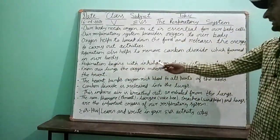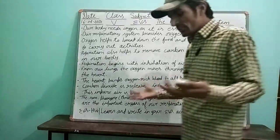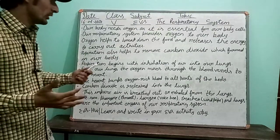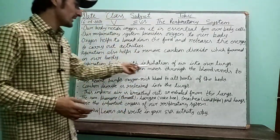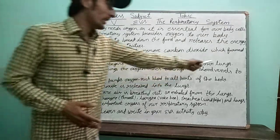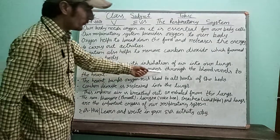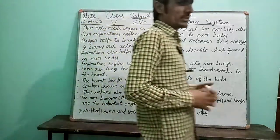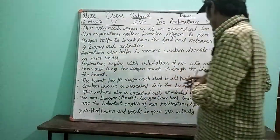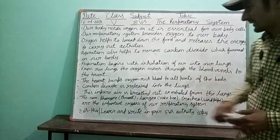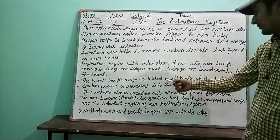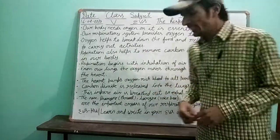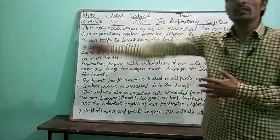Respiration begins with the inhalation of air into our lungs. When we take air inside our body, that is respiration. This process of taking air in is known as inhalation, and it is done by our lungs. From our lungs, the oxygen moves through the blood vessels to the heart. When we inhale, oxygen gets mixed into our blood, moves to the heart through the blood vessels, and the heart pumps oxygen-rich blood to all parts of the body.